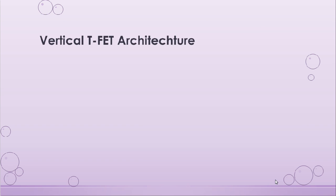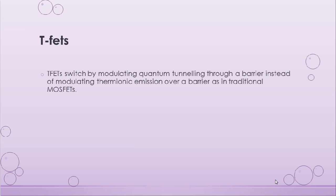Now that we are done with the FDSOI architecture, let us have a look at the vertical TFET architecture. Before we begin, let us first understand the function of a TFET, or a tunneling FET. A TFET is a switching device which switches by modulating the quantum tunneling through a barrier, instead of modulating the thermionic emission over a barrier, which is the case with traditional MOSFETs.